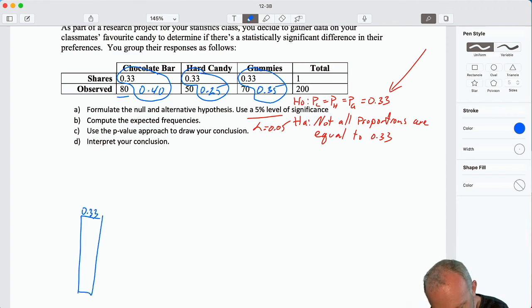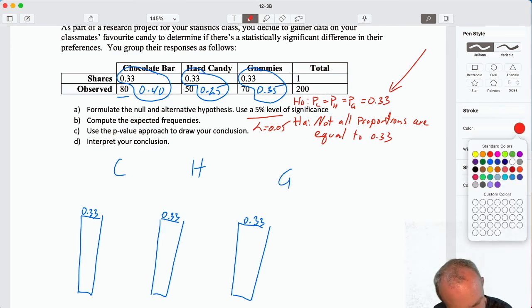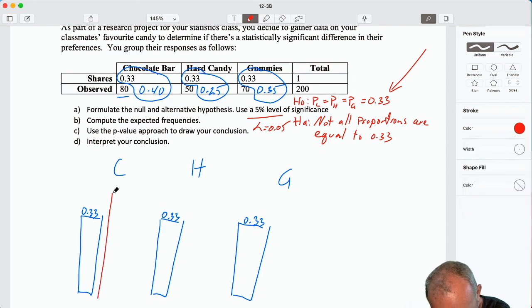So our prior assumption is that all of them are equally preferred, so here I have they're all equally preferred, a third, a third, and one third. So there's our chocolate bar, hard candy, and gummies. What do we observe? Well we certainly observed the chocolate bar is actually more preferred, the hard candy is actually less preferred, and the gummies, oh that's pretty close to what we expected.